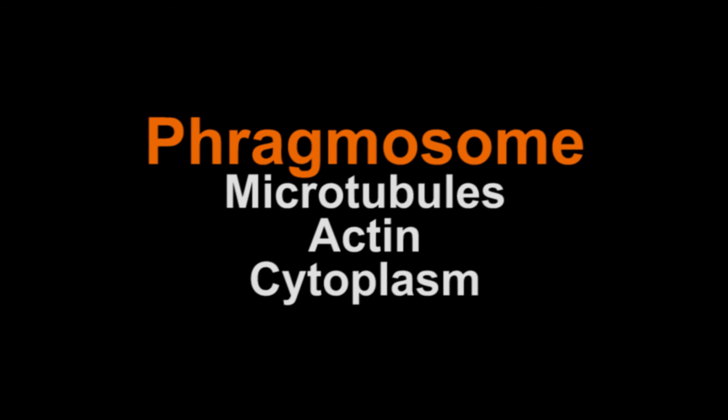Vacuole Division. In plant cells with large vacuoles, the vacuole is divided by the phragmosome before the nucleus and the cell divides. The phragmosome is made of microtubules, actin filaments, and cytoplasm. The nucleus is moved out of the way by the microtubules or actin filaments. The phragmosome becomes a thin sheet of cytoplasm and cytoskeleton that divides the vacuole into two pieces. While this is happening, the nucleus divides and the cell plate forms.